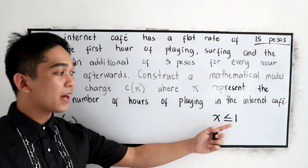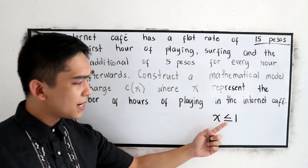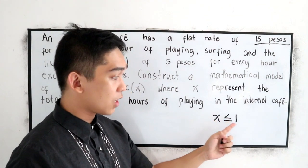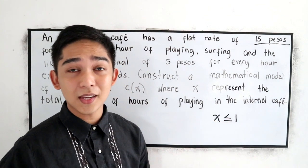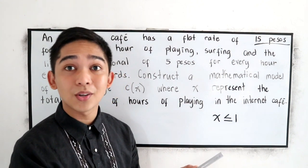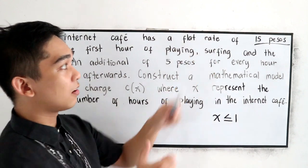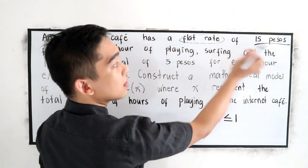Ang babayaran mo daw ay 15 pesos. So explain natin to: x is less than or equal to one, so ibig sabihin mas mababa sa isang oras o kaya eksaktong isang oras, magkano yung babayaran niya? Meron tayong flat rate na 15 pesos.